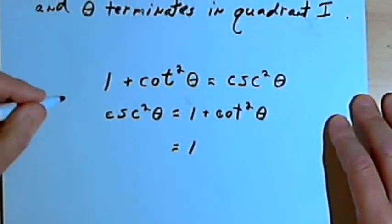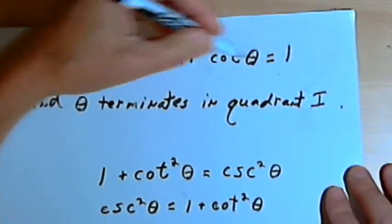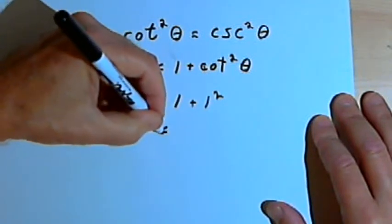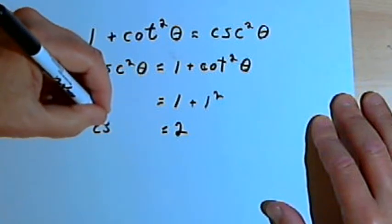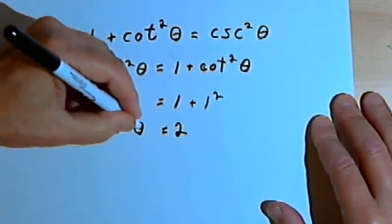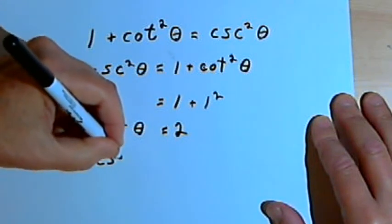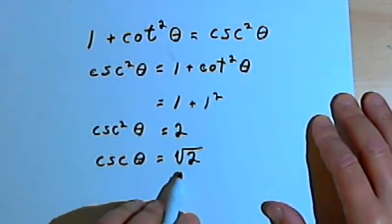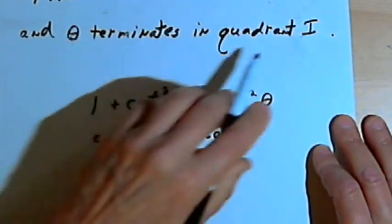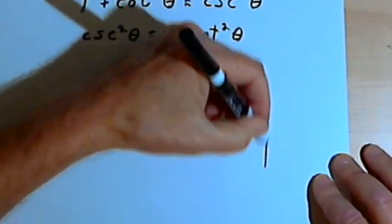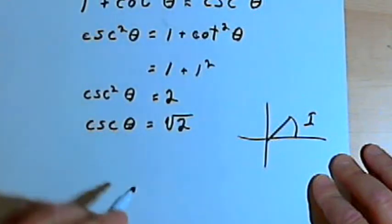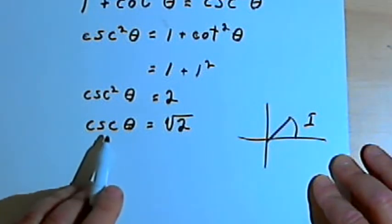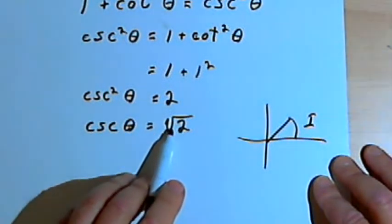Plugging in the value for the cotangent of theta — that was just 1 — we get 1 plus 1 squared, which is 2. So the cosecant squared of theta is 2, which means the cosecant of theta is the square root of 2. Theta terminates in quadrant 1, where all of the trig functions are positive. So cosecant of theta equals the square root of 2.